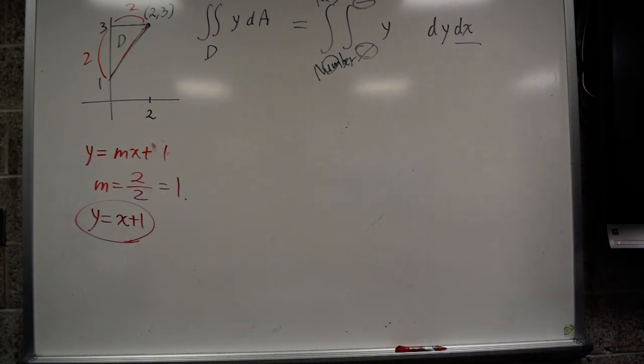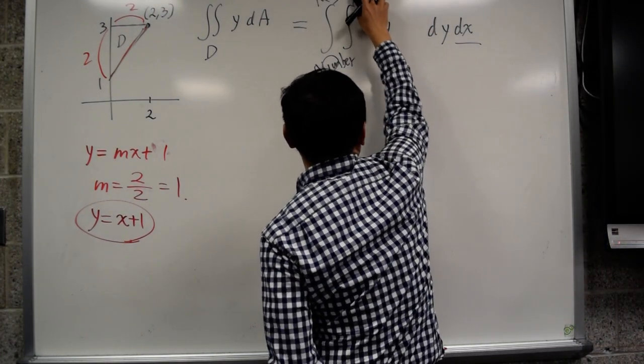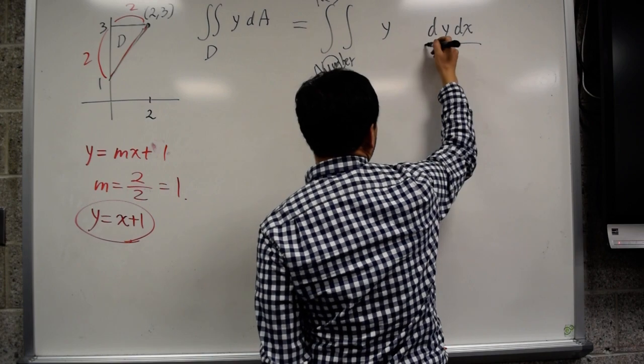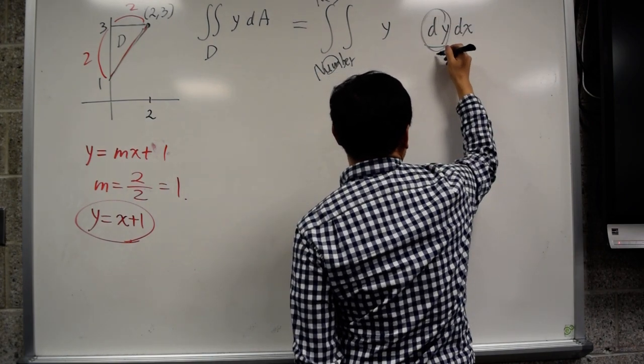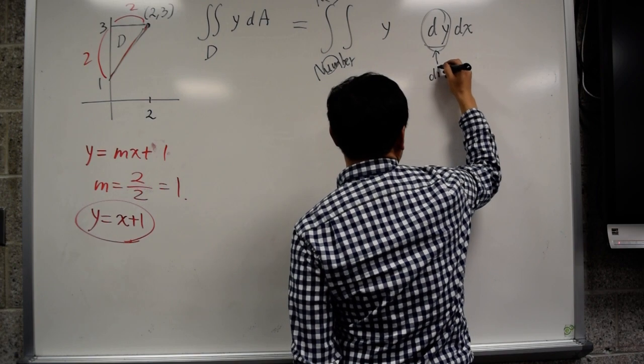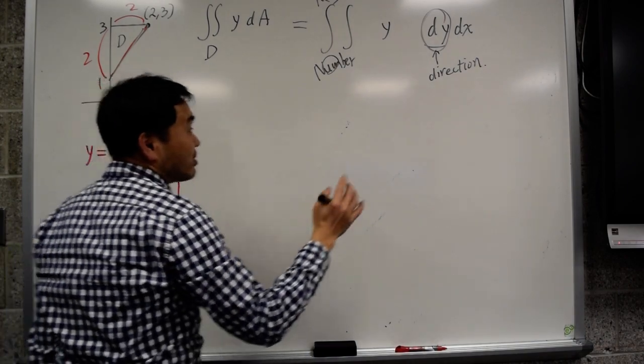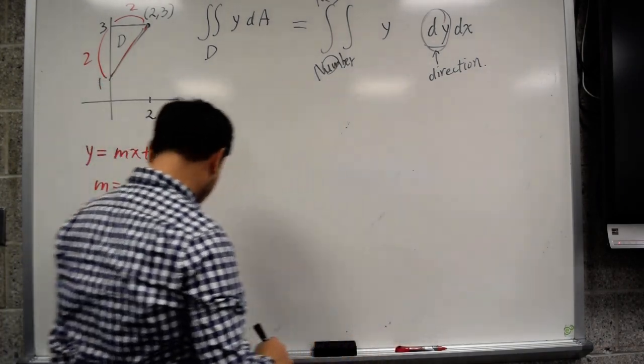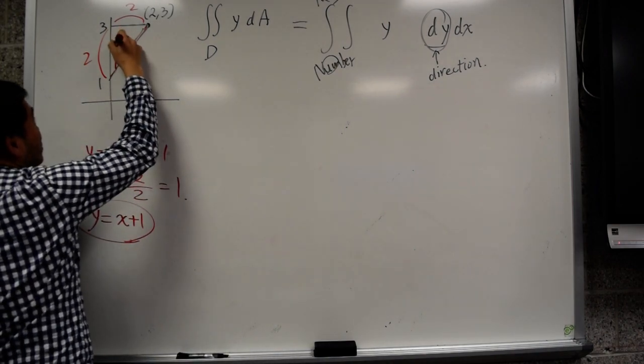All right. Now, a helpful analogy that I like to use is that whenever you put dy or dx inside, look at what's inside, and think about the direction that you're integrating. So dy means it's an increment in the y direction, so what you're trying to do is you're trying to paint this region D going upwards.